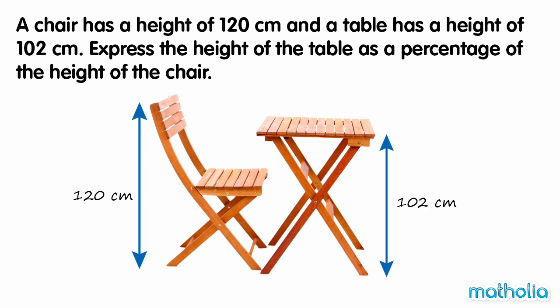A chair has a height of 120 cm, and a table has a height of 102 cm. Express the height of the table as a percentage of the height of the chair.